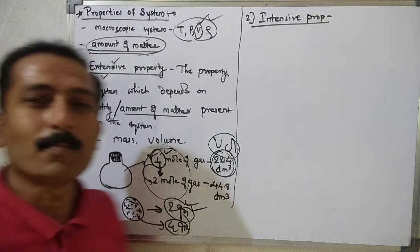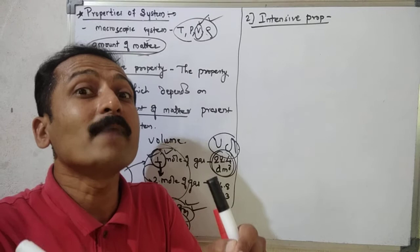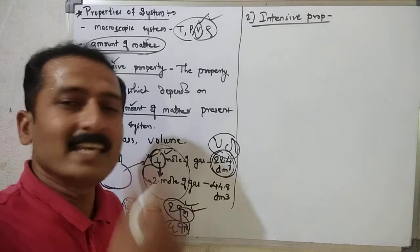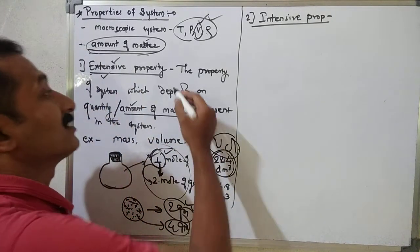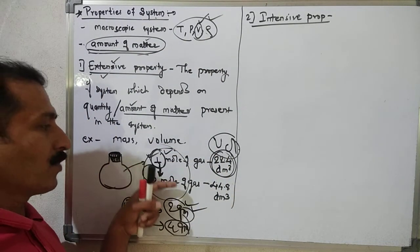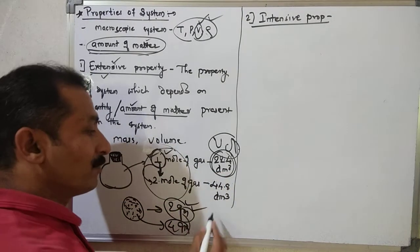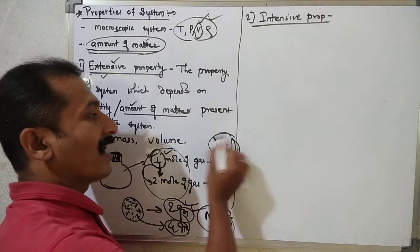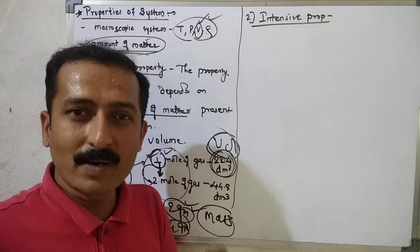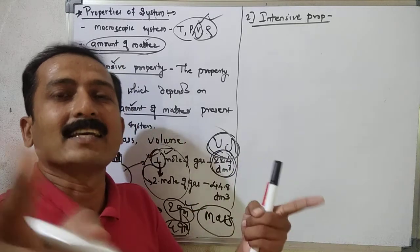The property of the system which depends upon the quantity of matter present in a system is called extensive property. So volume is an extensive property because it depends on the amount of matter present in the system.